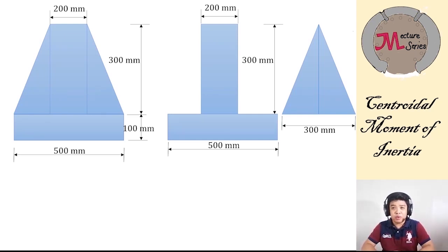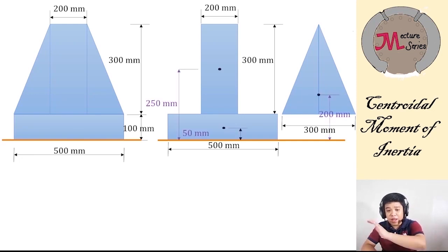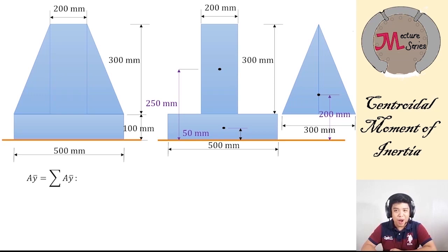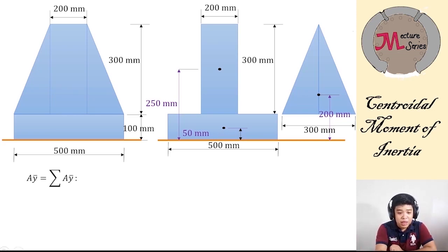To locate the neutral axis, establish an initial reference line — most people use the bottom of the section. After doing that, locate all centroids of each figure from the reference line. Then use Varignon's theorem: total area times Y-bar. The Y-bar on the left side of the equation is the location of the neutral axis, and A is the total area of the figure. On the right side, the summation of A·Y-bar is the area times the centroid of each figure from the bottom.